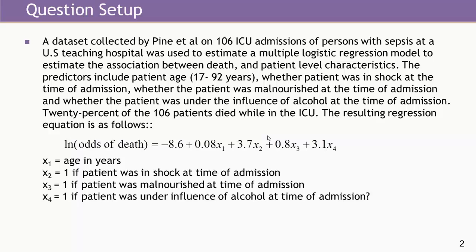The predictors include the patient's age, which ranges from 17 to 92 years in these data, whether the patient was in shock at the time of admission, whether the patient was malnourished at the time of admission, and whether the patient was under the influence of alcohol at the time of admission.